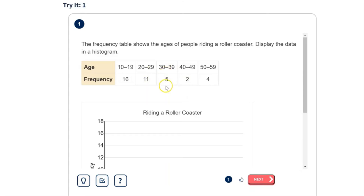From ages 30 to 39, there were 5 people that rode the roller coaster. From 40 to 49, there were 2 people. And from 50 to 59, there were 4 people.